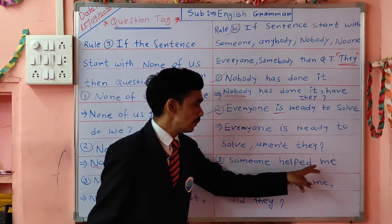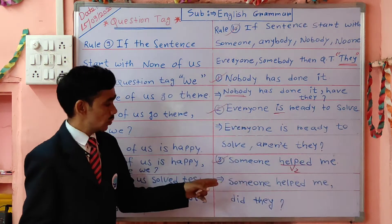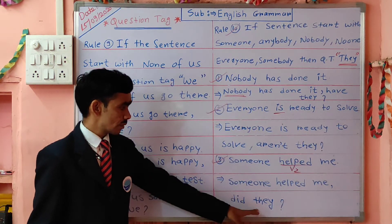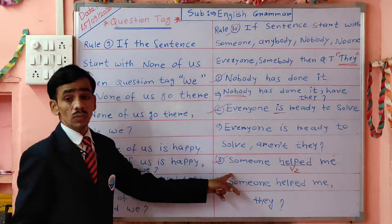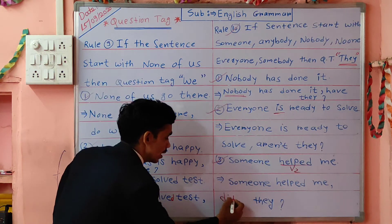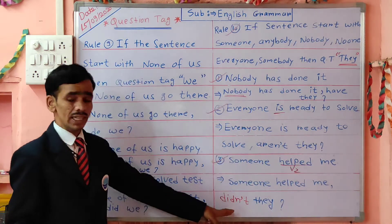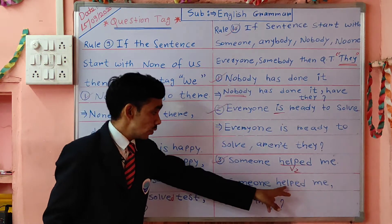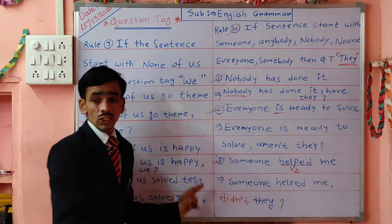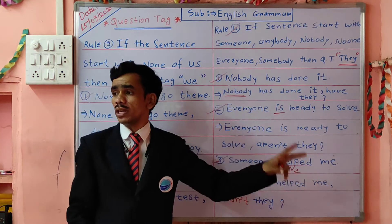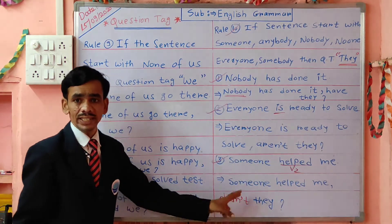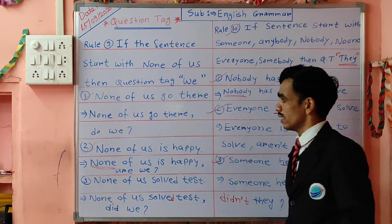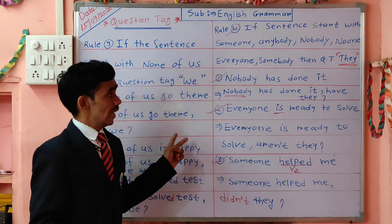Next example: 'Someone helped me.' Here V2 is there. Then we take: 'Someone helped me, didn't they?' We take 'they' because of 'someone' — because of our rule: someone, everyone → take 'they.' We take 'didn't' because of positive meaning, and you have the rule: positive sentence → negative question tag. So we take 'didn't they.' Write down properly in your notebook, and ask me if you don't understand. Thanks for watching my video — like and subscribe also.